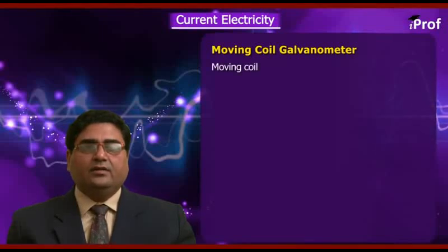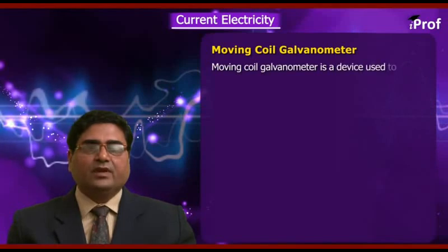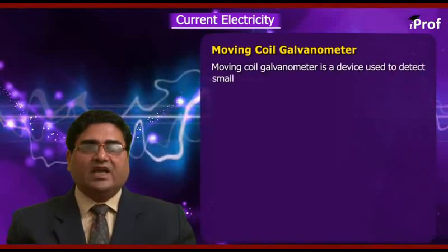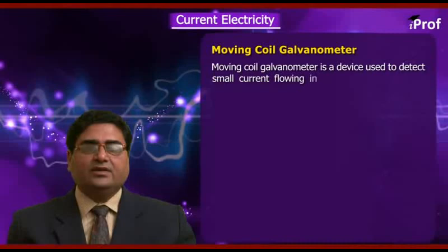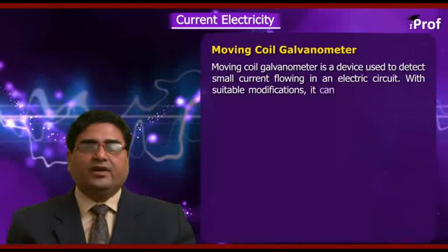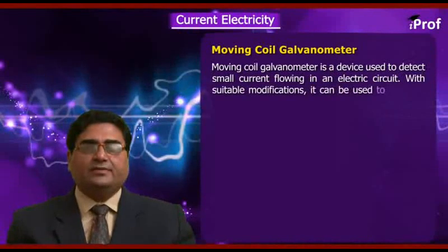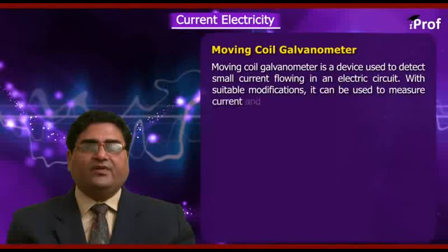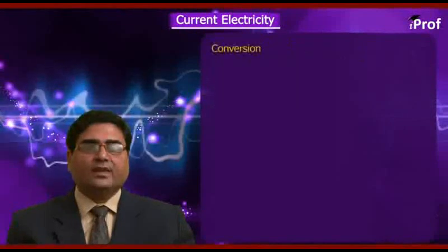Now, let's see moving coil galvanometer. Moving coil galvanometer is a device used to detect a small current flowing in an electric circuit. With suitable modifications, it can be used to measure current and potential difference.